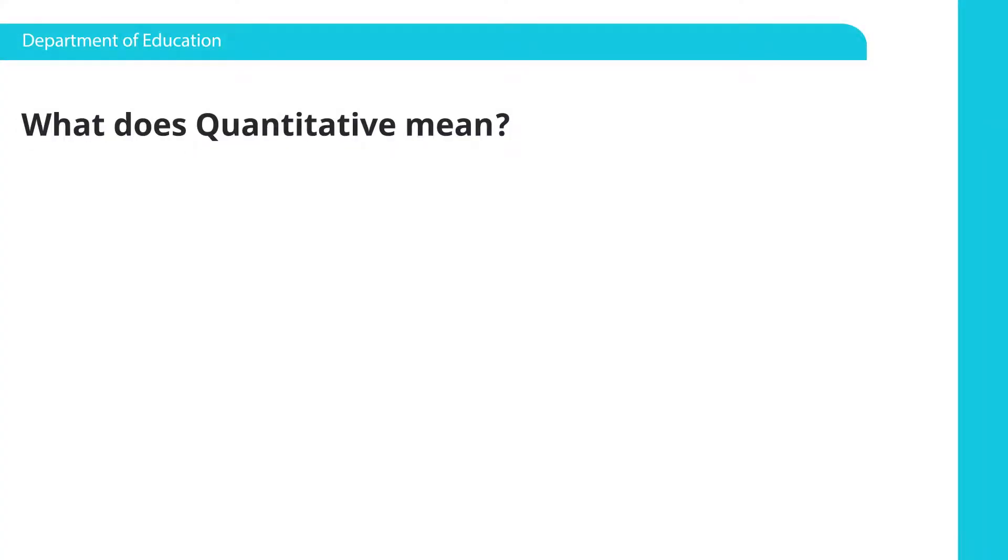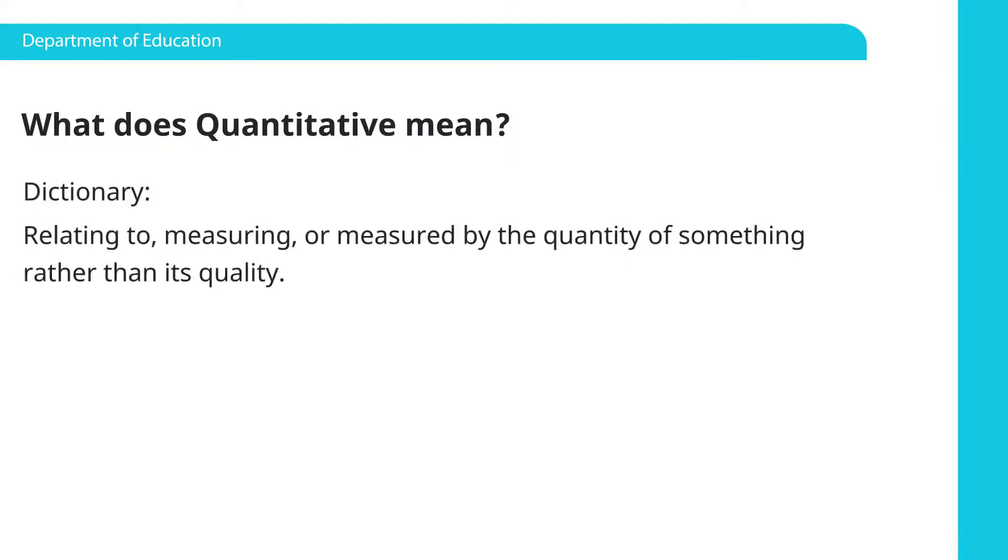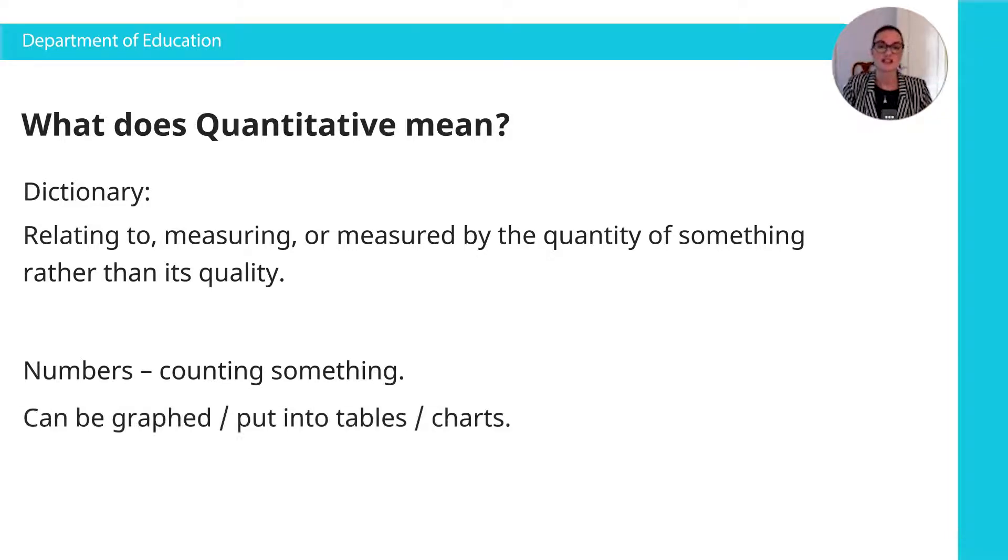So first of all, what does quantitative mean? This is possibly the first time you've heard this word. It's relating to measuring or measured by the quantity of something rather than its quality. So now we're looking at the quantity of something and that usually involves numbers and statistics and you're counting something. This type of data can be graphed and can be put into tables and charts. Now qualitative data, you can do the same, but this is particularly relevant to quantitative data.